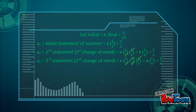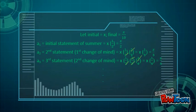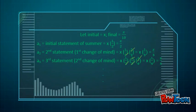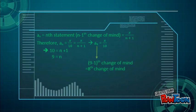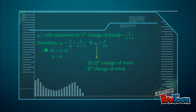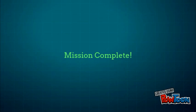a₁ = X/2 (first statement), a₂ = X/3 (second statement), a₃ = X/4, and so on until aₙ, the nth statement. The pattern shows aₙ = aₙ₋₁ × (n/(n+1)). Since aₙ = X/10 = X/(n+1), we get n = 9. Subtracting 1 from 9 gives 8, which is the number of times Summer changed her mind. Mission complete.